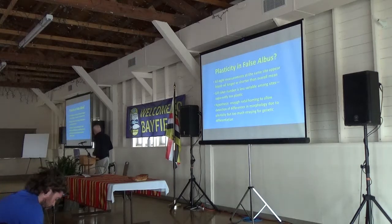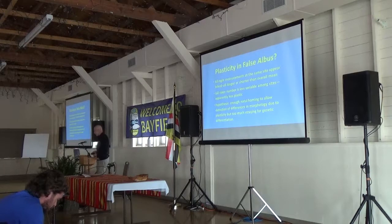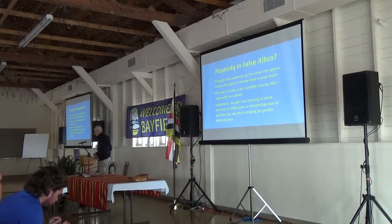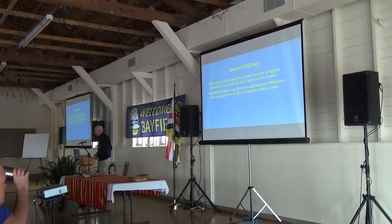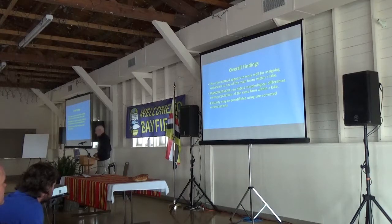My take on this was that all eight measurements at the same site appear to shift together — they're all longer or shorter than the overall means — while gill raker number is less variable among sites, apparently less plastic. The hypothesis here, which needs more work, is that there may be enough site fidelity to allow detection of differences in morphology due to plasticity, but too much gene flow for genetic differentiation. My overall findings: the ratio method appears to work as well for assigning individuals to one of the main forms within a lake. ANCOVA can detect morphological differences among populations of the same form. Morphological plasticity may be quantifiable using size-corrected measurements.